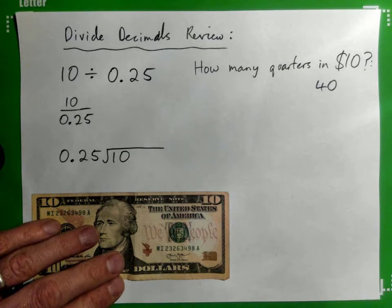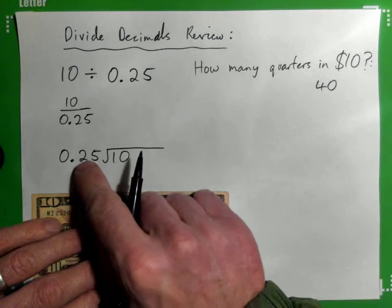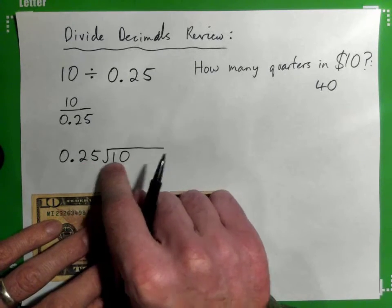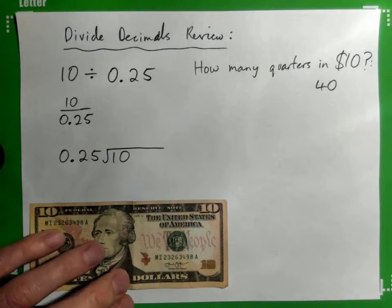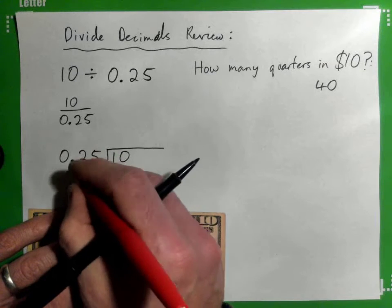The answer should be 40, we all agree on that. The problem is we can't just divide if the divisor has a decimal in it, so we have to move that decimal point over until we get this to be a whole number. We're going to move this over one, two spots.